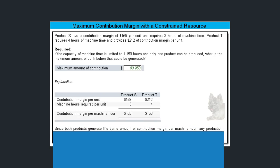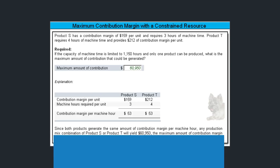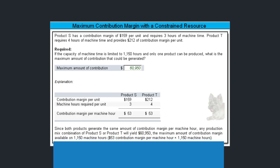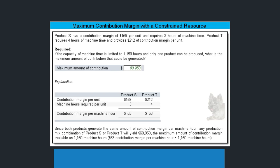Since both products generate the same contribution margin per machine hour, any production mix combination of S and T will yield $60,950 — the maximum contribution margin available on 1,150 machine hours. Take $53 times 1,150 machine hours. That's how you solve this exercise dealing with calculating maximum contribution margin when you have a constrained resource.